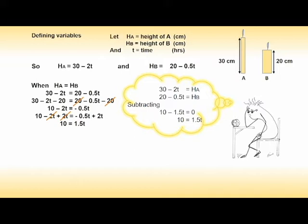Press pause to solve for t or continue. For convenience, swap the sides so t is on the left. And divide both sides by 1.5. Cancel, giving t equal to 10 over 1.5.